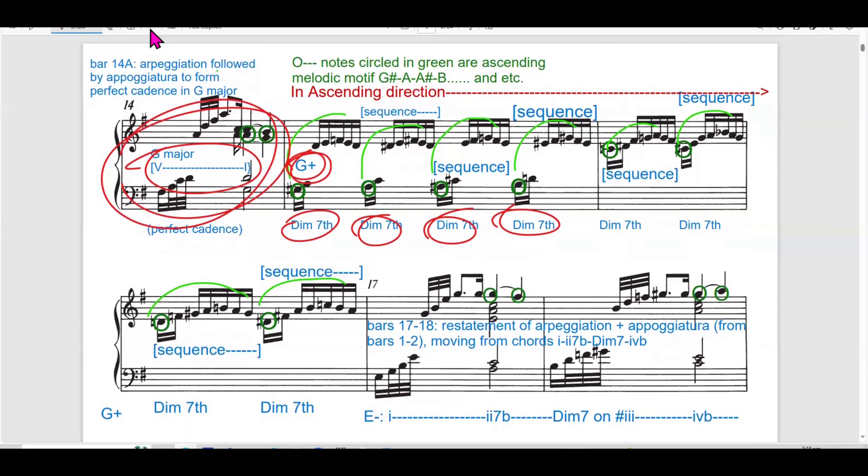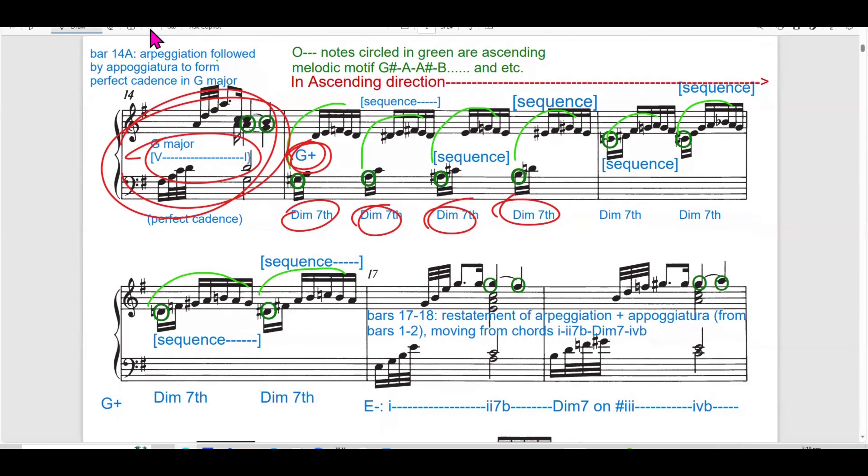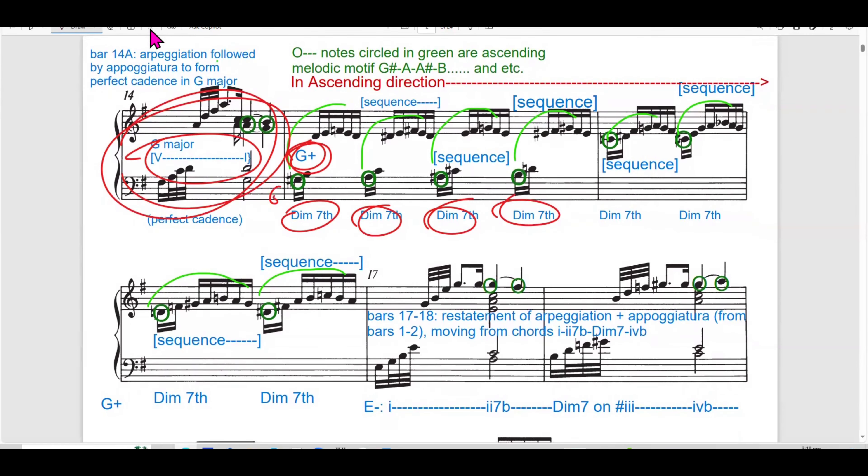This is a transition into G major, which is the relative major of E minor. So, the harmonic progression leads from perfect cadence of G major, solidifying the tonal shift. The arpeggiated movements in both hands create a layered effect, with the appoggiatura adding tension before resolving.